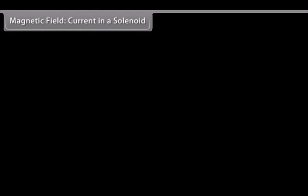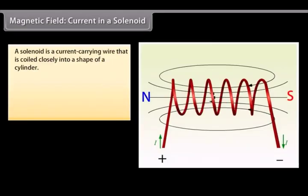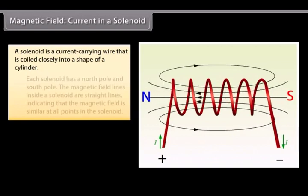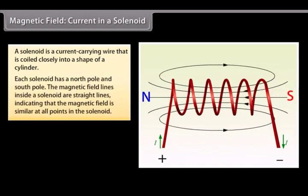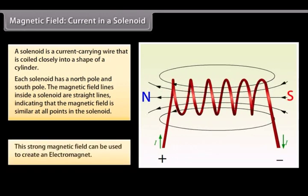Magnetic Field: Current in a Solenoid. A solenoid is a current carrying wire that is coiled closely into a shape of a cylinder with the turns as close together as possible. This is similar to a bar magnet. Each solenoid has a north pole and south pole. The magnetic field lines inside a solenoid are straight lines and indicate that the magnetic field is similar at all points in the solenoid. This strong magnetic field in the solenoid can be used to magnetize magnetic materials. This type of a magnet is called an electromagnet.